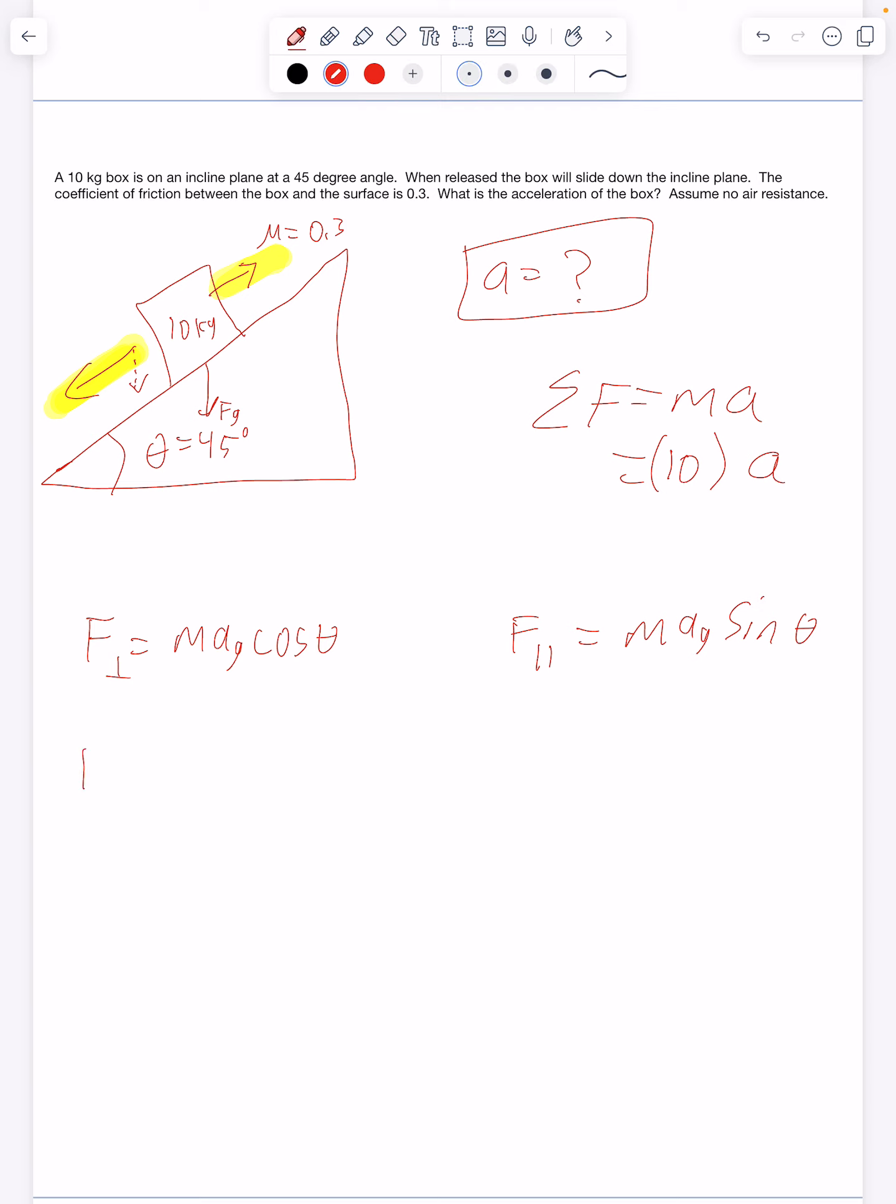So the first one. Force perpendicular would be equal to, I'm going to just plug numbers straight in. 10, that's the mass. 9.81, that's the acceleration of gravity. Cosine of 45. All right. So we're going to plug that in. We're going to make sure our calculator is in degrees, not radians. Cosine 45. We get 69.37 Newtons. So the force perpendicular is 69.37 Newtons.